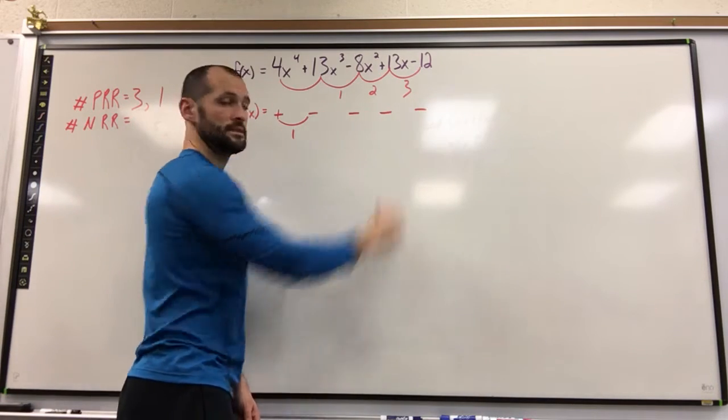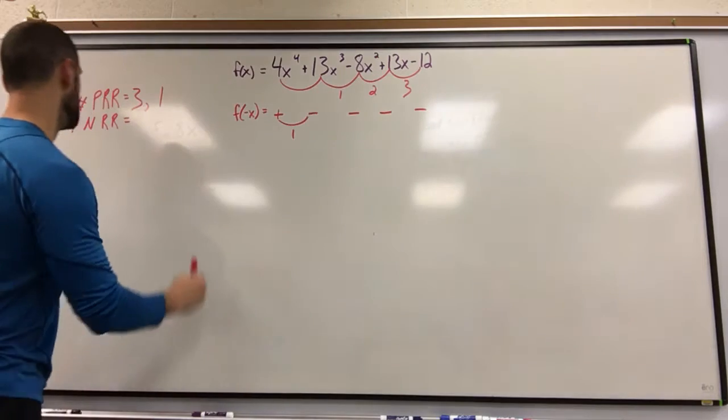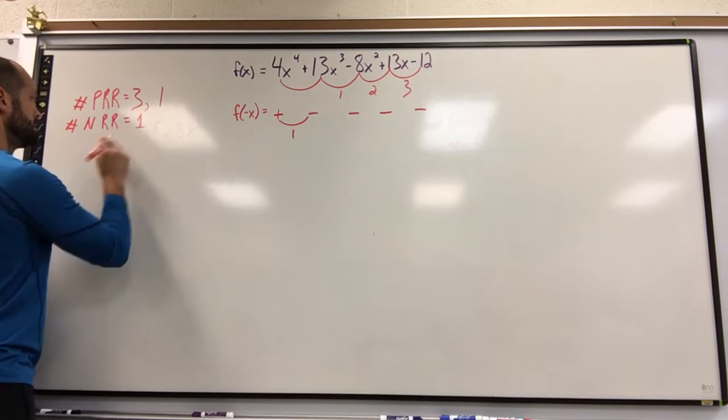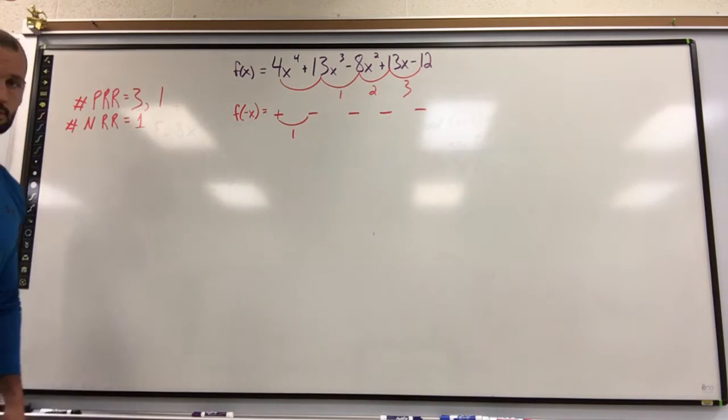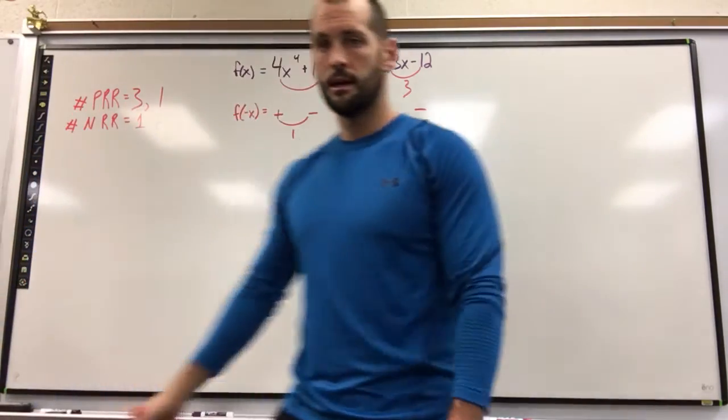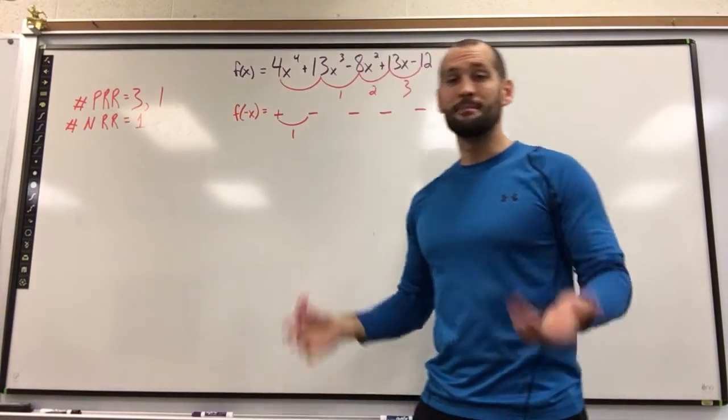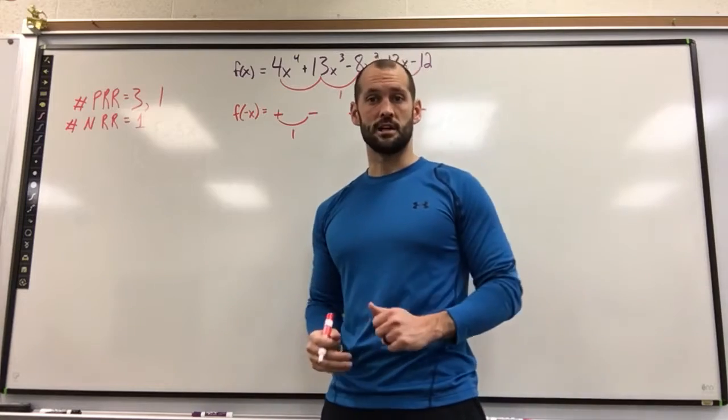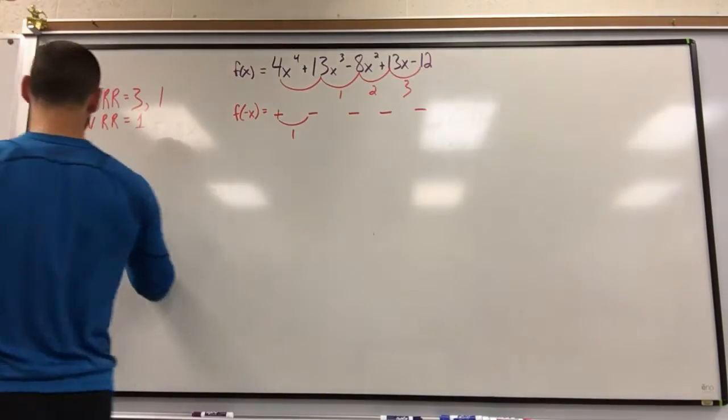From here on out, it stays negative. So that means I only have one potential negative real root. Only one potential negative real root. So how do we find our potential imaginary roots? Or hashtag PIR, potential imaginary roots.